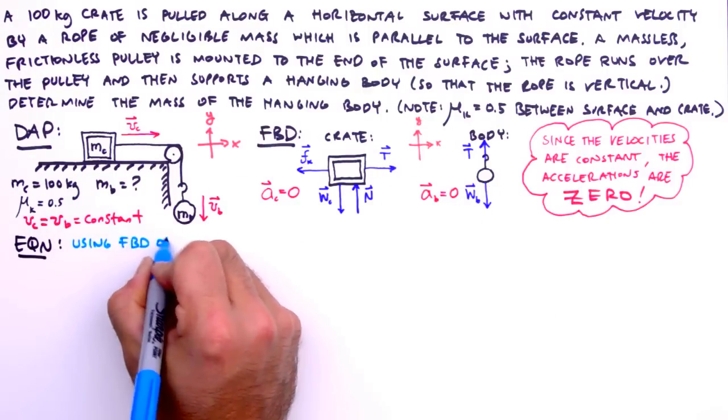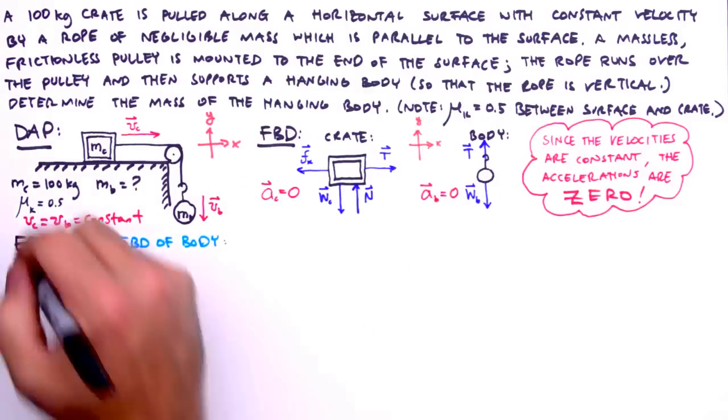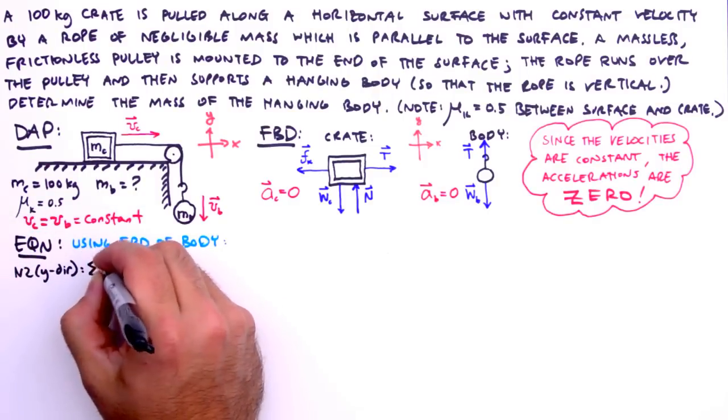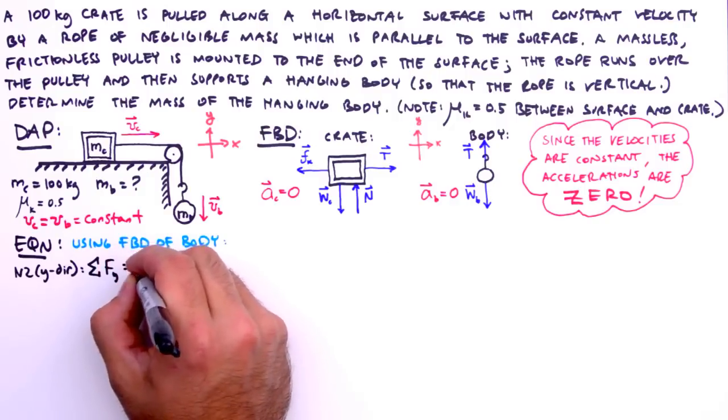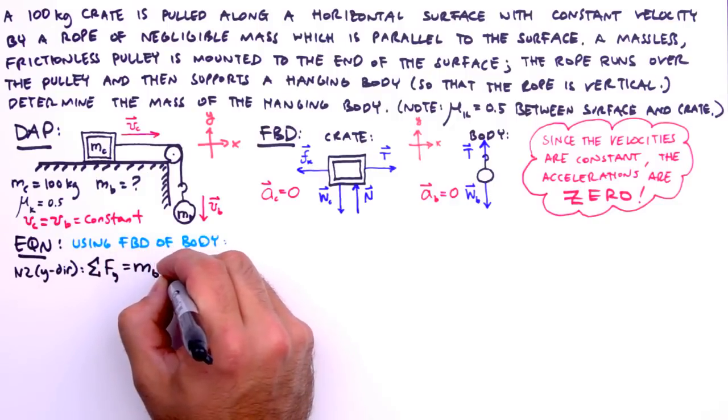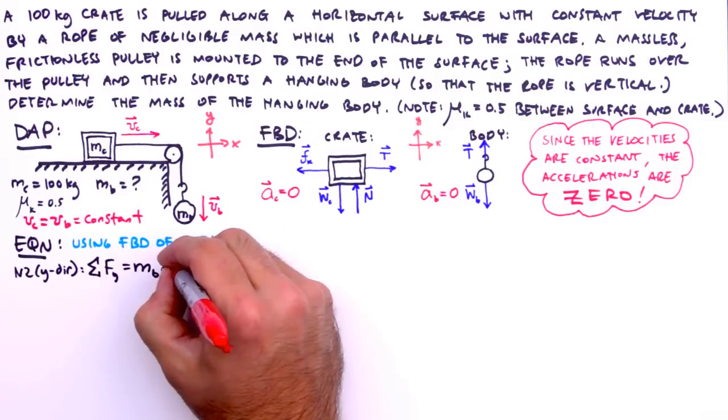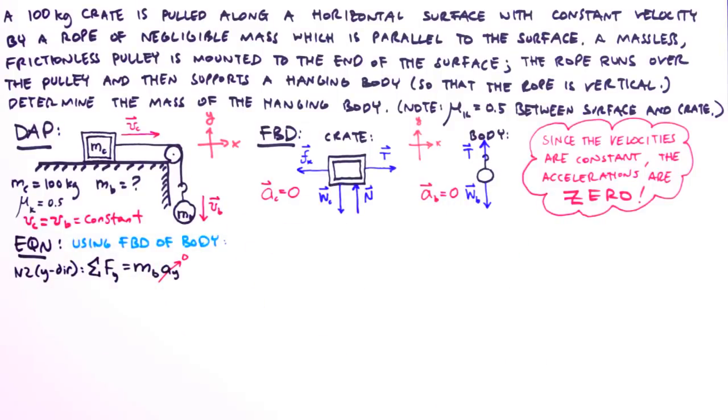We'll start by using the FBD of the hanging body. Applying Newton's second law of motion to the body in the y direction yields the sum of the forces in the y direction equals the mass of the body times the acceleration of the body in the y direction. As mentioned before, the body's acceleration is zero.